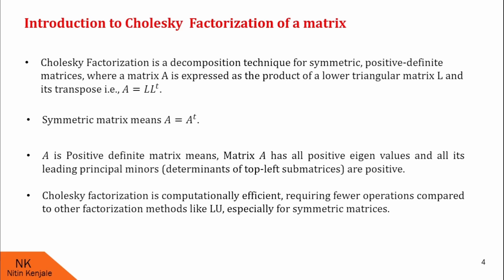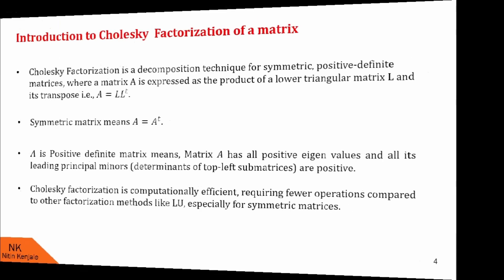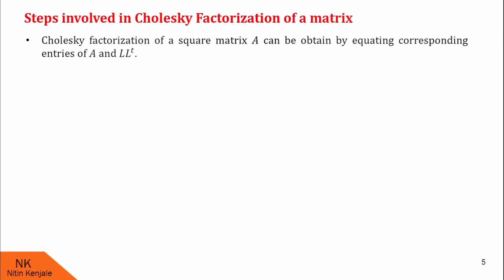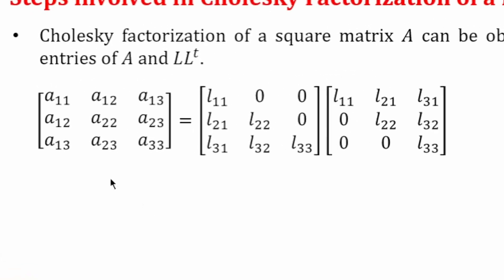Now let us see the steps involved in Cholesky Factorization. Cholesky Factorization of a square matrix A can be obtained by equating corresponding entries of matrix A and L into L-transpose. For example, consider this as matrix A, this as matrix L, and this as L-transpose. Note that matrix A is a symmetric matrix. Therefore, its (i,j)th entry is the same as the (j,i)th entry. Therefore, A21 is written as A12, A31 as A13, and A32 as A23.